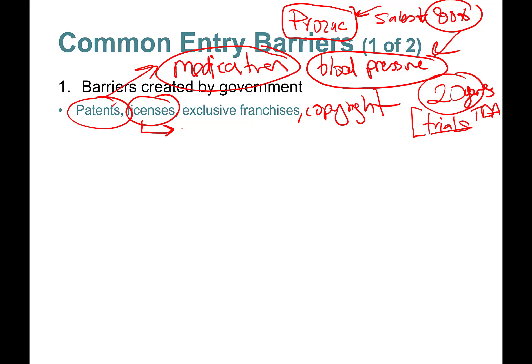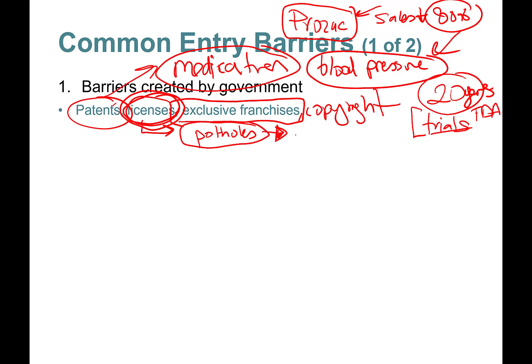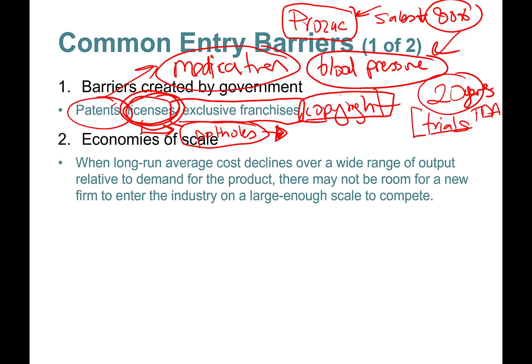Licenses are another government-created barrier — for instance, attorneys must pass the bar exam, and dentists must be licensed. Even estheticians, beauticians, and nail technicians require licenses, which protect people from incompetent practitioners. Exclusive franchises occur when the government grants certain companies the right to provide a specific service — like fixing potholes in a city. Copyrights apply to creative works.